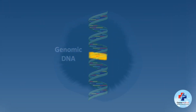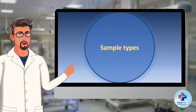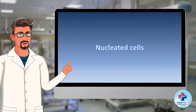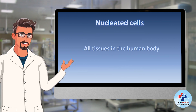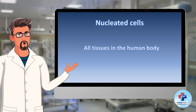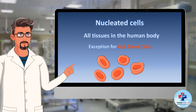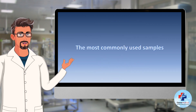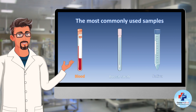But how can we obtain genomic DNA and from which tissues? Essentially, all cellular life forms containing a nucleus can be utilized for DNA extraction. Therefore, you can technically extract the required DNA from every tissue in the human body, excluding red blood cells due to the obvious absence of the nucleus. The most commonly used samples for DNA extraction include blood, cheek swab — also known as buccal samples — and saliva.